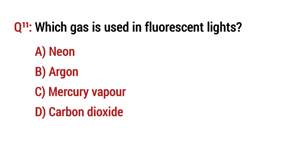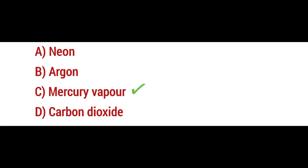Question number 11: Which gas is used in fluorescent lights? The right option is C: Mercury vapor.